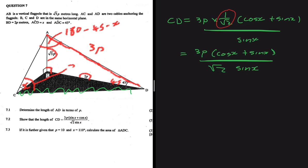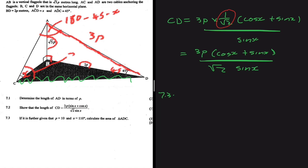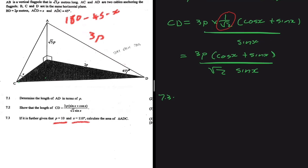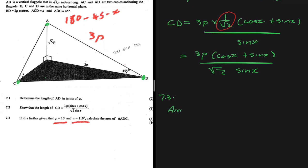Now let's do the last question, 7.3. 7.3 says: if it is further given that P equals 10 and X equals 110 degrees, calculate the area of triangle ADC. Let me just erase a few things so we can have a bit of clarity. We want the area of triangle ADC. When we want to find the area of a triangle, we say half times side 1 times side 2 times the sine of the angle those two sides sandwich.